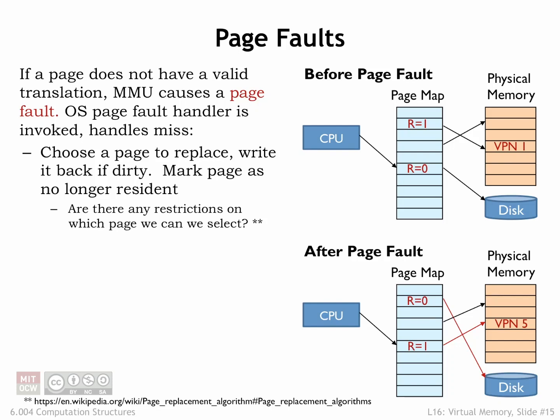Let's review what happens when the CPU accesses a non-resident virtual page, i.e., a page with its resident bit set to zero. In the example shown here, the CPU is trying to access virtual page 5. In this case,